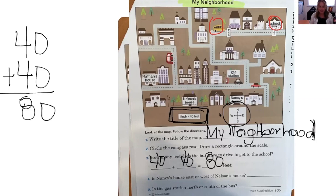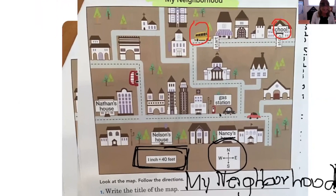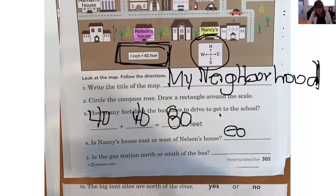Number four: is Nancy's house east or west of Nelson's house? So we got to find Nancy's house and Nelson's house. Here is Nelson's house, and there is Nancy's house right there. Is Nancy's house east or west of Nelson's house? According to your compass, look at Nancy's house and look what direction it is — east. So you're going to write in "east" right there.